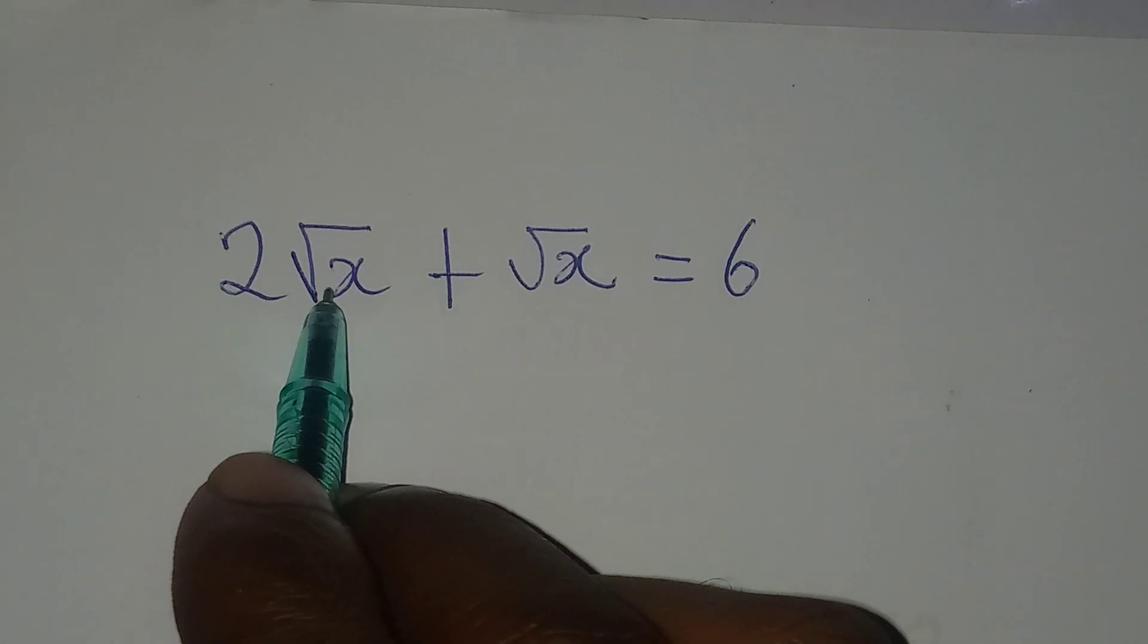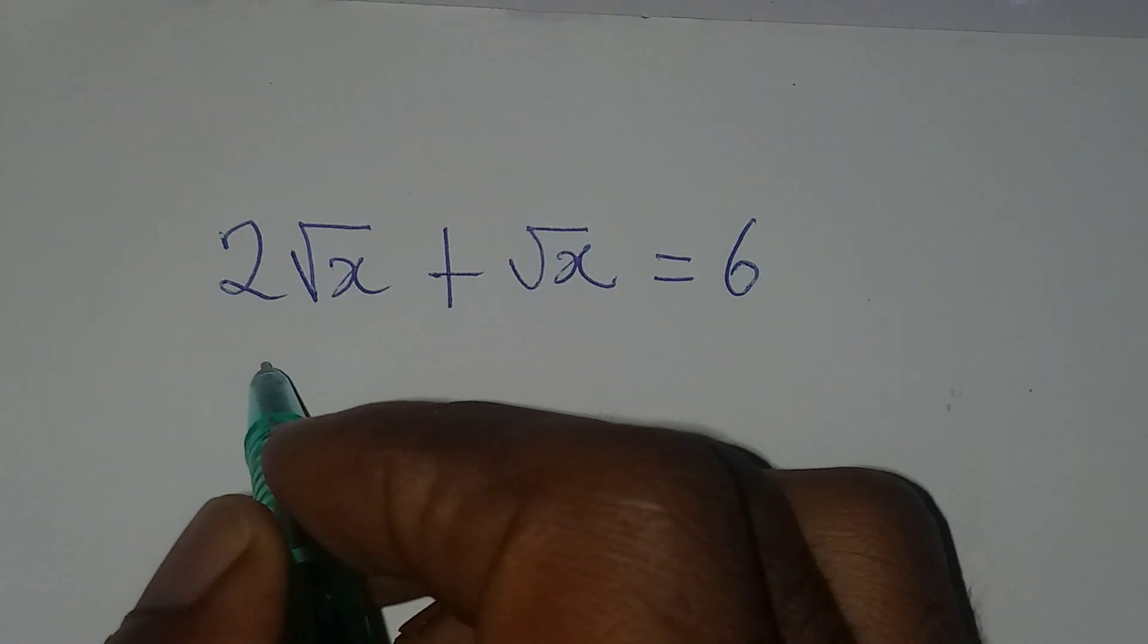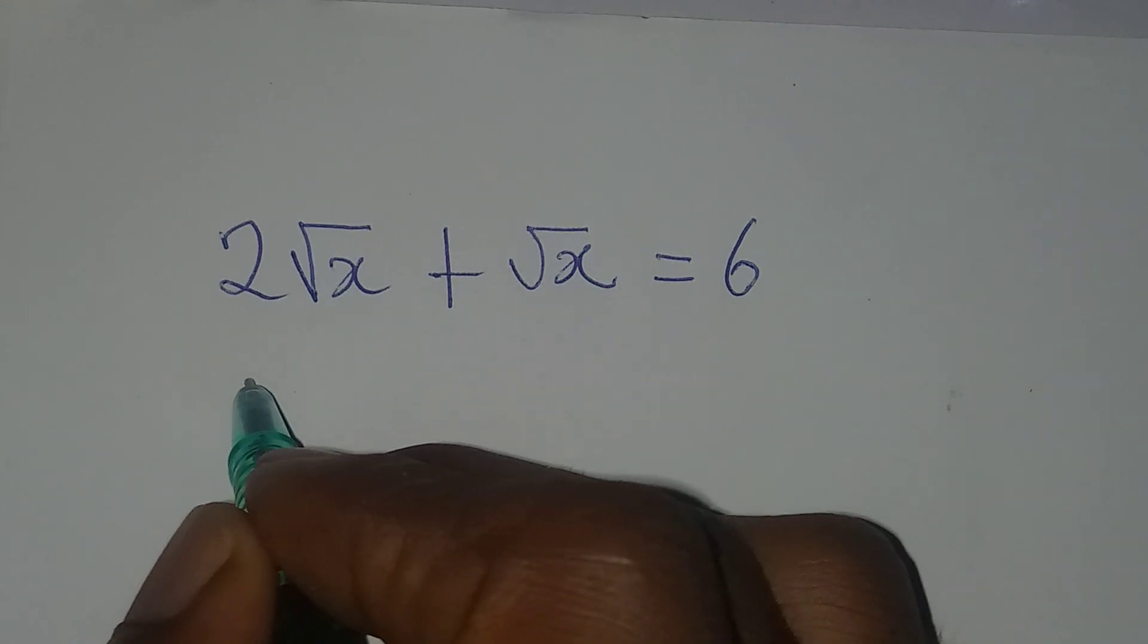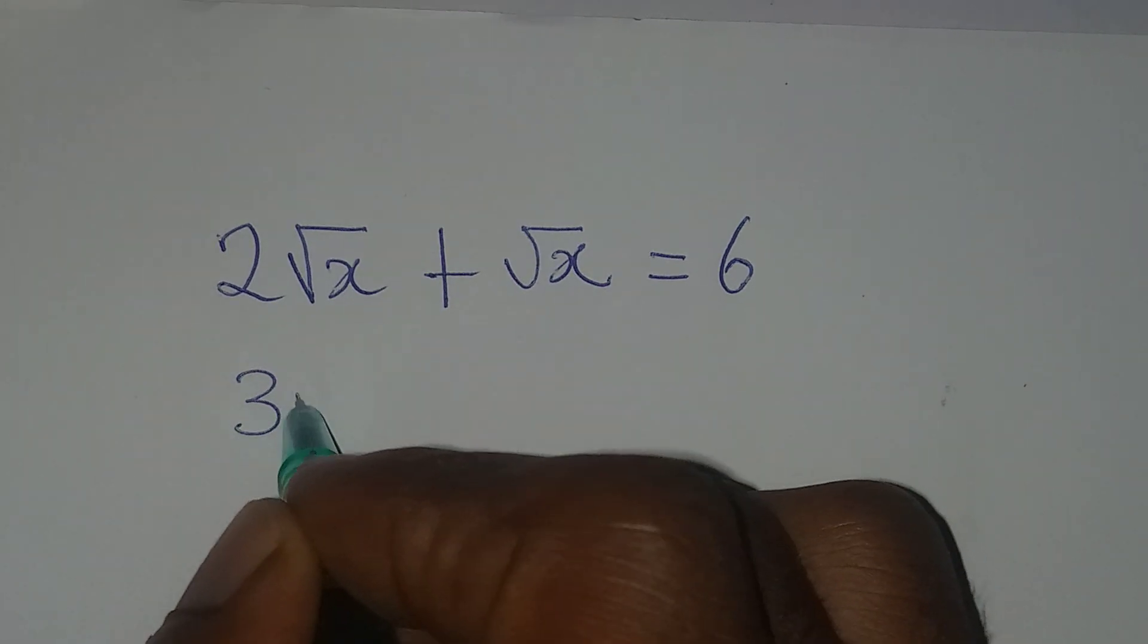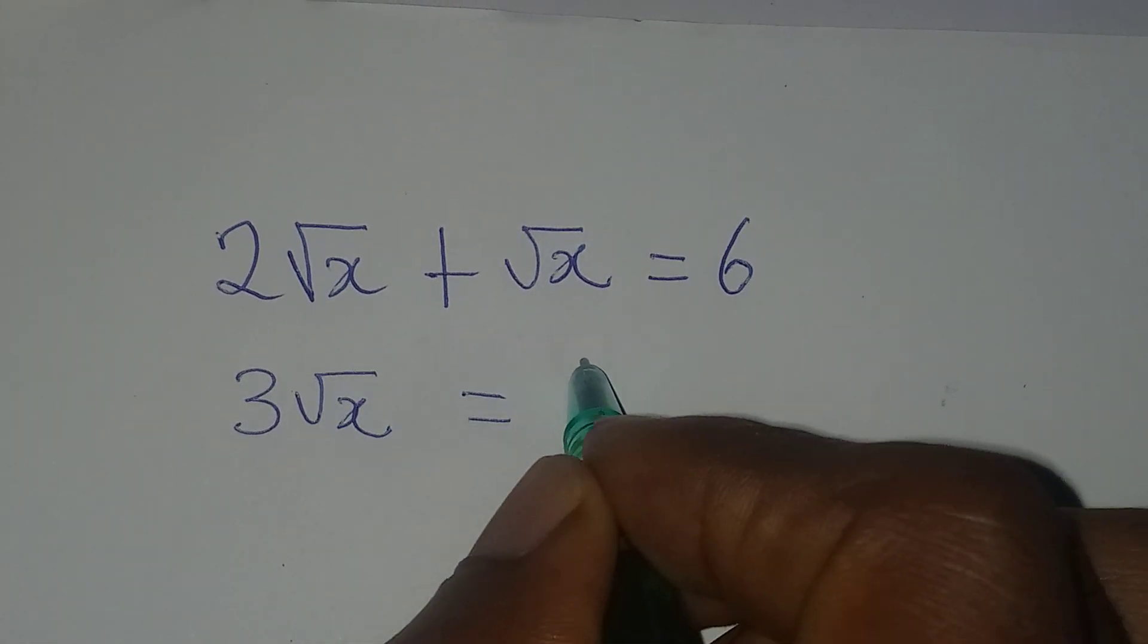Now, because we have root x on the left hand side, we can put them together. So 2√x + 1√x will give us 3√x, and this will be equal to 6.